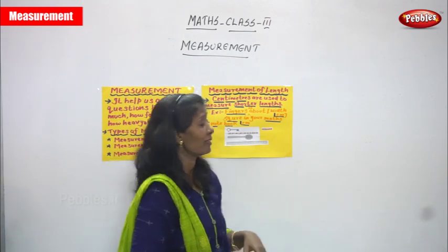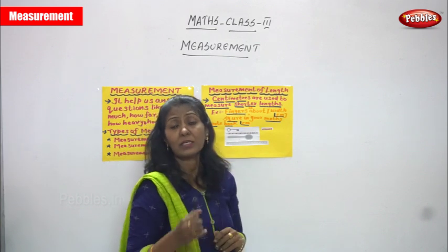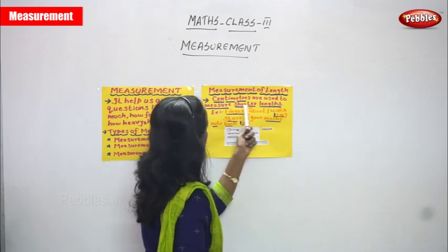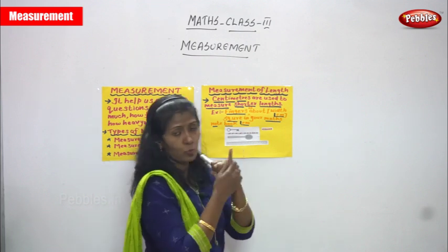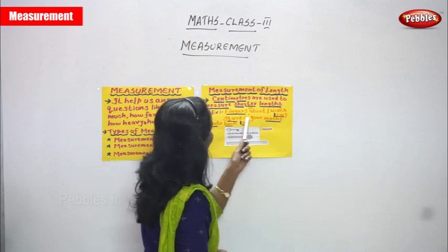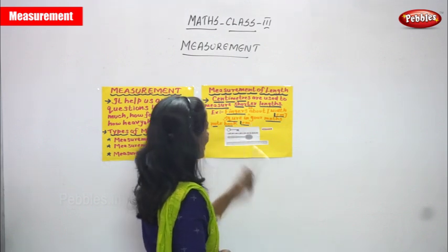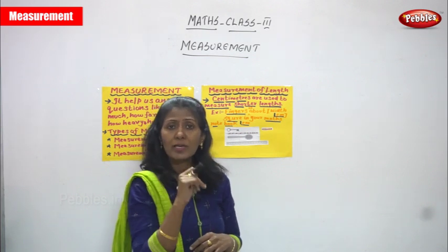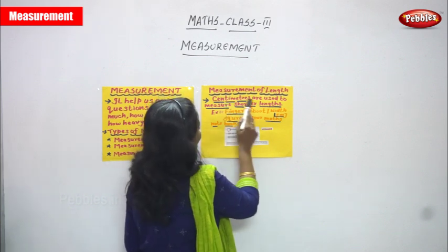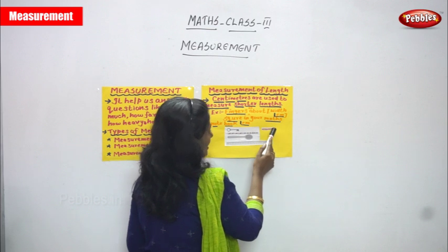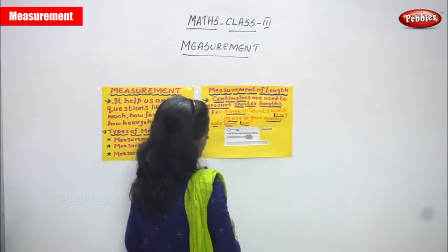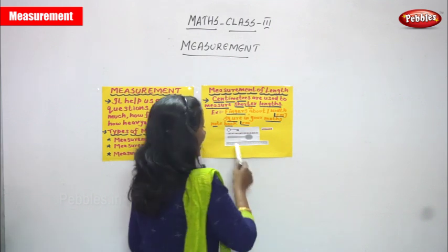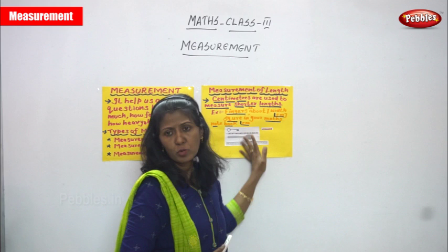First we are going to see measurement of length. The units are centimeter, meter, and kilometer. Centimeters are used to measure shorter lengths — for example, the width of a small finger is about one centimeter, and one square in your math notebook is one centimeter. A crayon, a key, a pencil, a spoon, and a 15-centimeter scale all come under centimeter measurement.